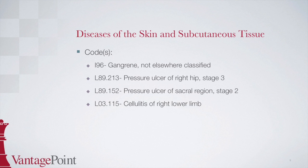The final code is L03.115, cellulitis of right lower limb. To locate this code, start at cellulitis in the alphabetic index, then find hip indented below, as documentation states the patient had a pressure ulcer of the right hip with cellulitis. There is a note next to hip stating 'see cellulitis lower limb.' After finding lower limb, we are directed to code L03.11 with a checkbox indicating more digits are required. In the tabular, subcategory L03.11 is for cellulitis of other parts of limb, and we find the right lower limb as L03.115.